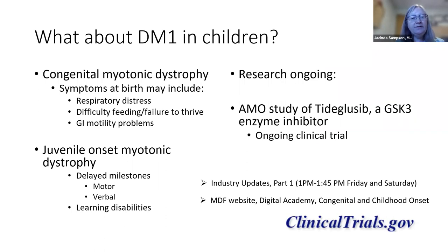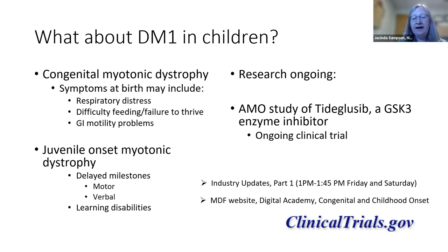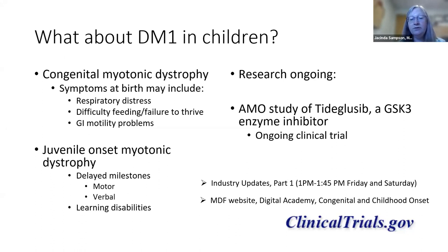Myotonic dystrophy can affect children too. Higher repeat numbers tend to manifest earlier due to anticipation. The congenital form may present at birth with difficulty breathing, swallowing, or breastfeeding; failure to thrive; need for a feeding tube; and GI motility problems. It may be identified in childhood with delayed milestones — verbal or motor — and learning disabilities, which are very common. Getting educational support with an IEP plan can be critical. There is ongoing research, several natural history studies, and a clinical trial studying the central nervous system involvement in children.